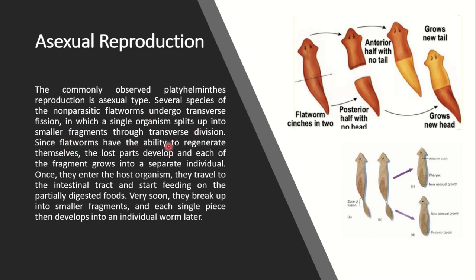Since flatworms have the ability to regenerate themselves, the lost parts develop and each fragment grows into a separate individual. As you can see in this picture, a simple flatworm is divided into two parts — the posterior half has no head and the anterior half has no tail.